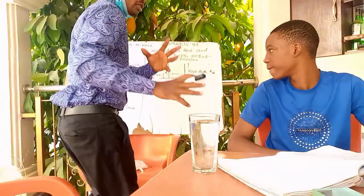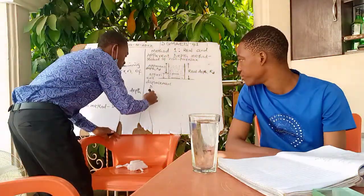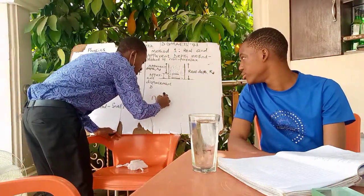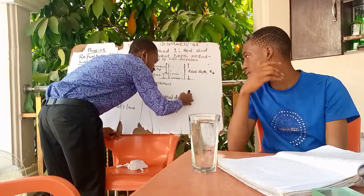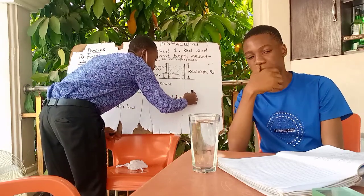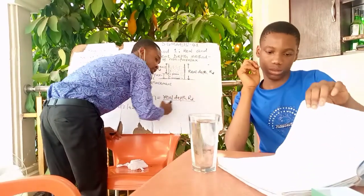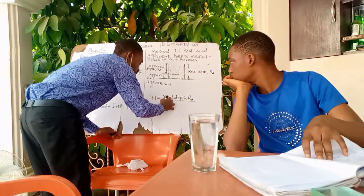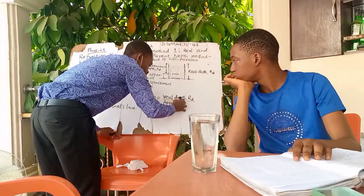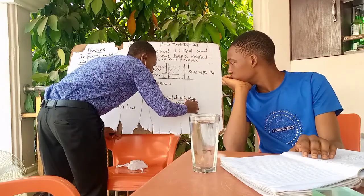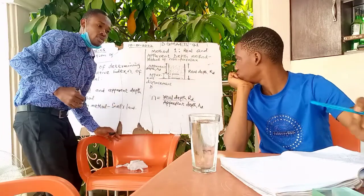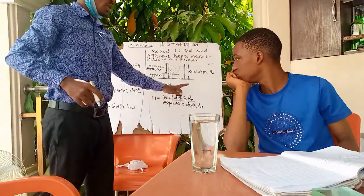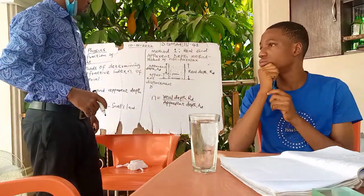So all we now need to do is measure this height accordingly, and then to get the refractive index of the water we use the formula: the refractive index N is equal to real depth, RD, all over apparent depth, AD. So this is the formula we're going to use, and with this we substitute and get our value.